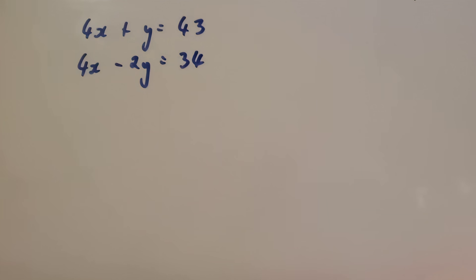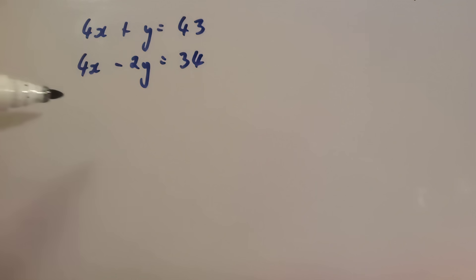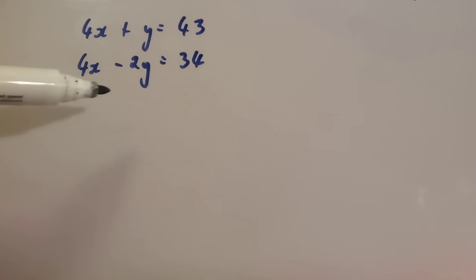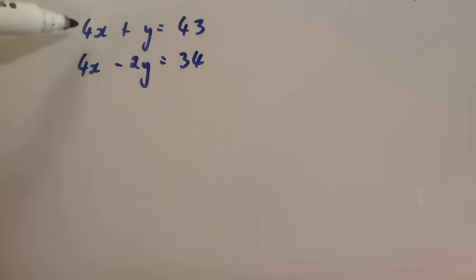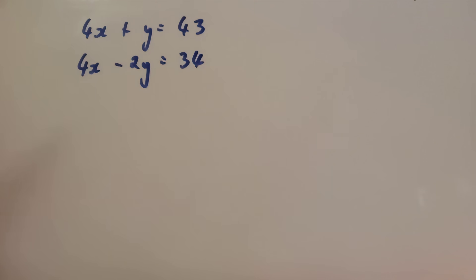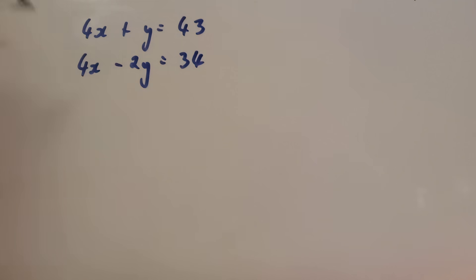In this pair of simultaneous equations we've got 4x plus y equals 43 and 4x minus 2y equals 34. We want to eliminate the x's because the coefficients are the same. Since we've got 4x and 4x, subtracting them gives 0. So we subtract the two equations — but be really careful with the next part.